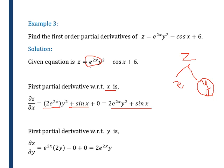Now we partially differentiate z with respect to y, keeping x constant. So del z by del y equals: e raised to 2x remains as it is; differentiation of y square is 2y. In the next term, differentiation of cos x will be 0 with respect to y, and 6 is constant so its derivative is also 0. So ultimately, del z by del y is equal to 2 e raised to 2x, y. These both are the first partial derivatives of the given function.